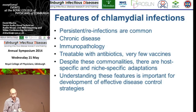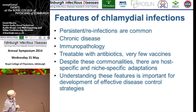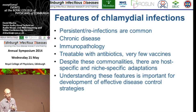Infections are treatable by antibiotics. There are some vaccines, notably in sheep, and also a vaccine for cats. Despite the commonalities of these infections — chronic infection and immunopathology — there are some very host-specific and niche-specific adaptations. These are things we can probe to understand the organisms better, because this is what will help us with disease control strategies.